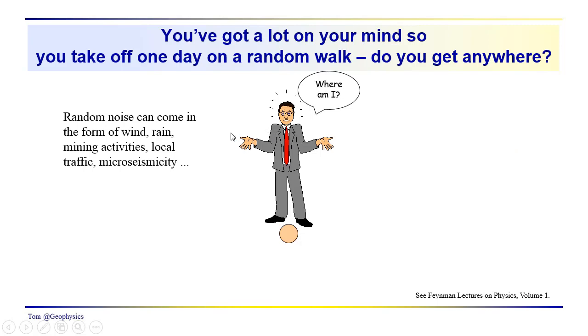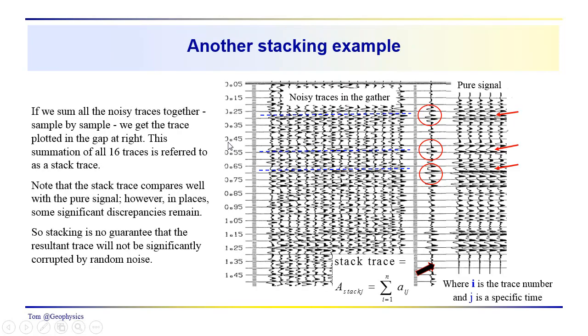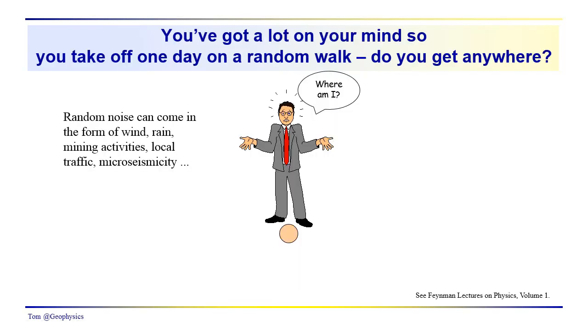So we need to talk about what is random noise. We've contaminated the signal with random noise from some distribution. Random noise usually comes in a variety of forms - wind, rain, mining activities, local traffic, micro-seismicity, tidal flexing of the Earth's crust throughout the day.